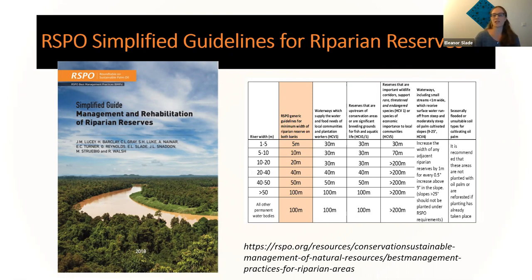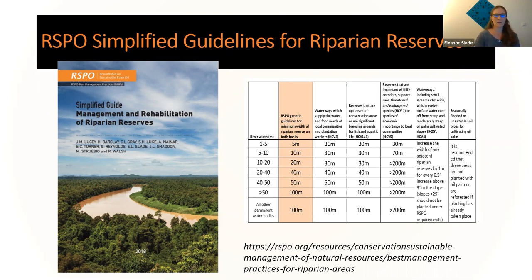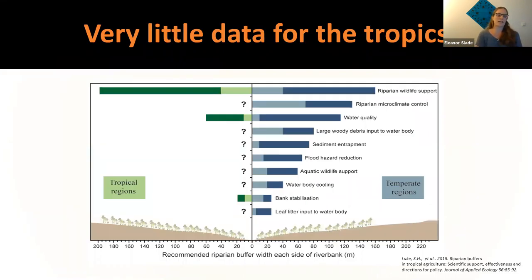The RSPO has just updated its principles and criteria and included best management practices for managing, rehabilitating and restoring riparian areas within oil palm plantations. So now if you're going for RSPO certification, you'll need to consider management of your riparian areas and potentially restore and rehabilitate them to meet RSPO standards. That's great — we have these guidelines and criteria — but what we weren't sure about is how strong the scientific evidence base is for these variable widths.